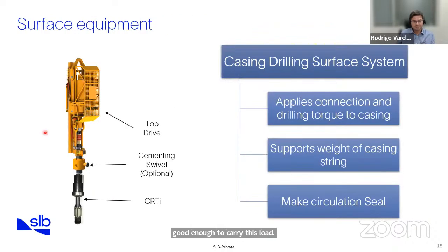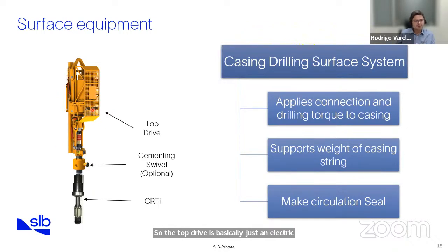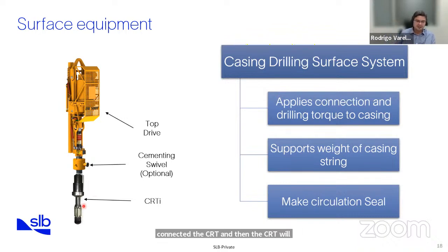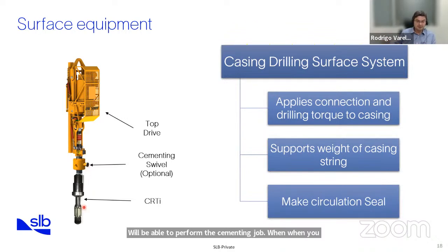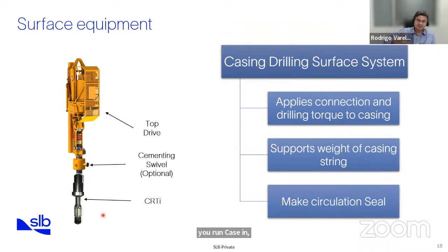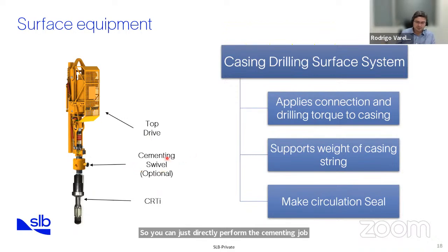For the top drive — an electric motor providing rotation to the string — instead of connecting drill pipe, you connect the CRT, which goes inside the casing to rotate, fill, and circulate. Sometimes we use a cementing swivel, an optional tool that allows performing the cementing job directly without laying down the CRT and connecting a cementing head. When you reach section TD with casing drilling, you can perform the cementing job directly through the cementing swivel.